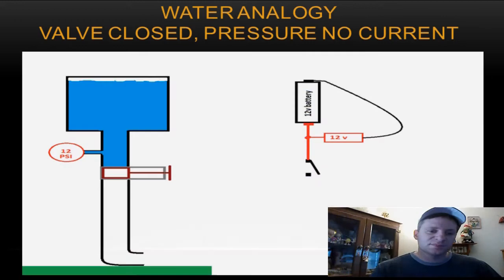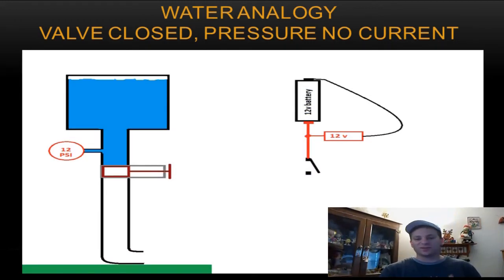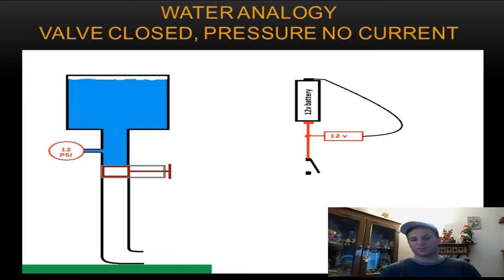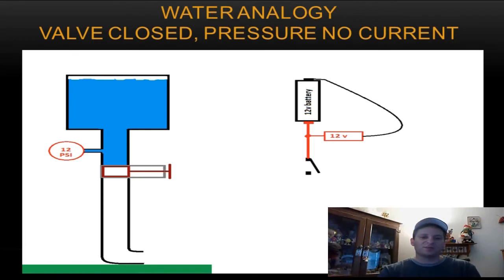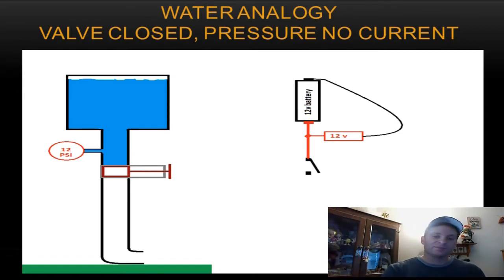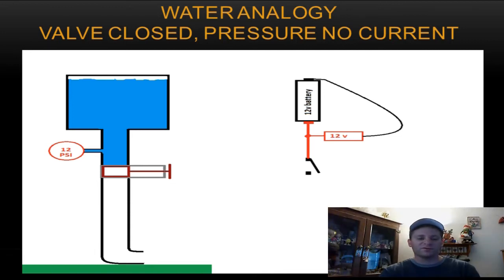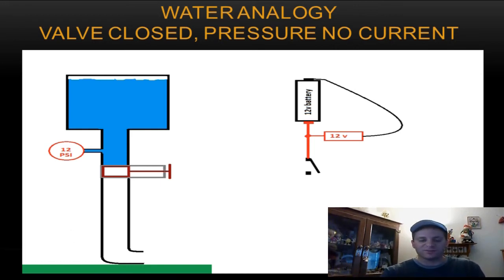Here is a simple diagram I drew up. On the left I have a water tower filled with water, with a pipe leading down to a closed valve, and a pressure gauge reading 12 psi — meaning the water is putting 12 pounds of pressure on top of that valve. That water tank can be compared to a 12 volt battery. The closed valve stopping the flow of water can be compared to the normally open contacts on the circuit, stopping electrons from flowing through the circuit.